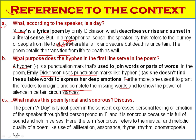Question C: What makes this poem lyrical and sonorous? The poem 'A Day' is lyrical because it expresses the personal feelings or emotions of the speaker through the first person pronoun 'I.' It is sonorous because it is full of sound and rich in verse. The term sonorous refers to the musical and melodic nature of the poem, achieved through use of alliteration, assonance, rhythm, rhyme, onomatopoeia and so on.